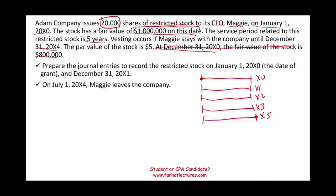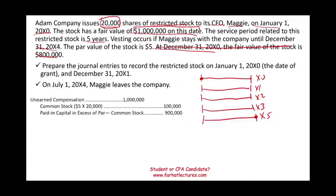It does not matter what the value is later. On the grant date, we record the entry based on the value of the stock on that date. So we're going to record something called unearned compensation — a million dollars. What is that million dollars? The fair value. What type of account is unearned compensation? It's a contra equity account, so it's going to reduce our equity by a million. It's not an expense — it's equity.